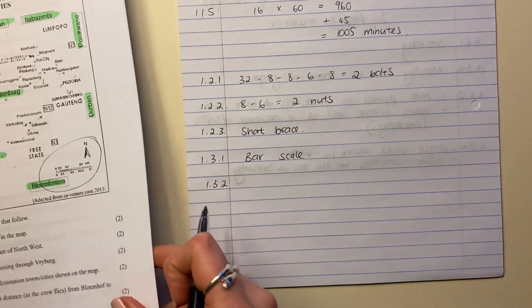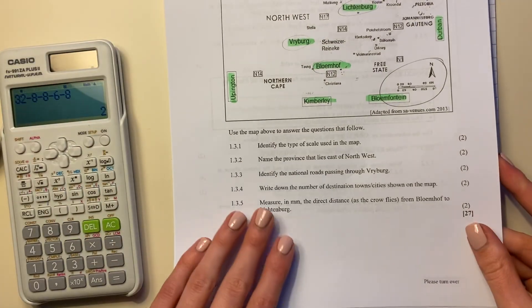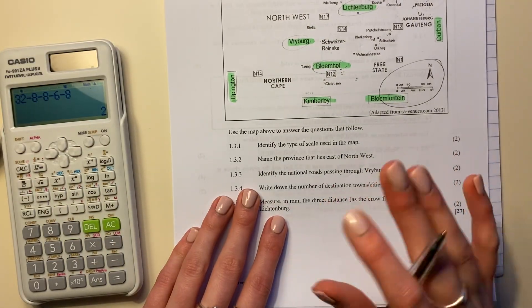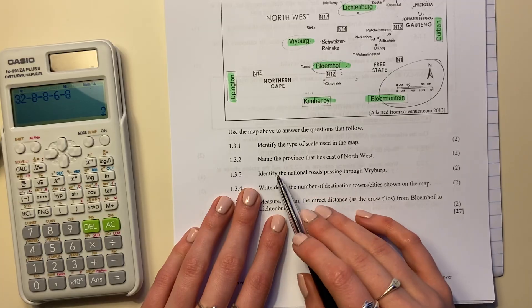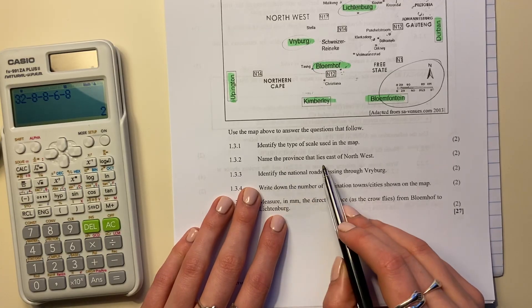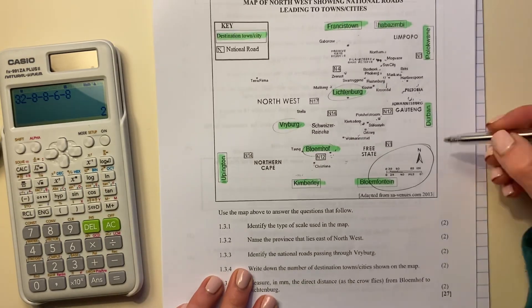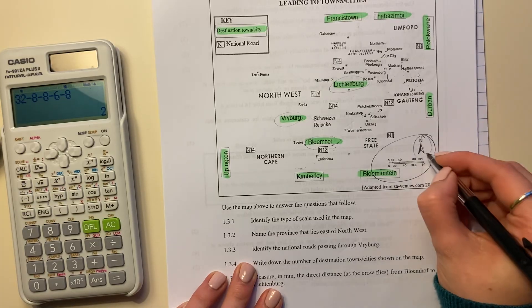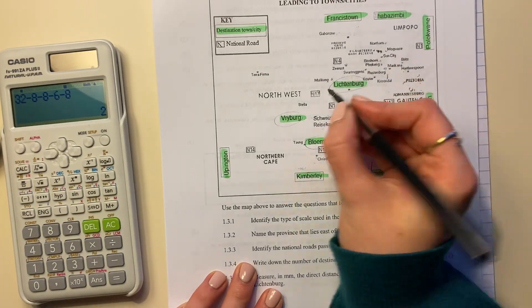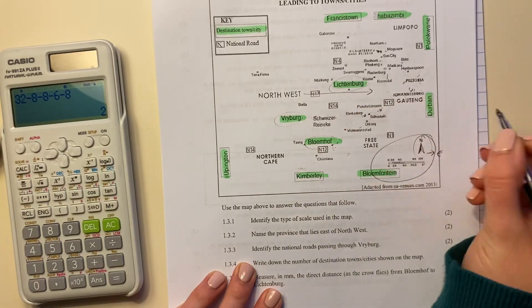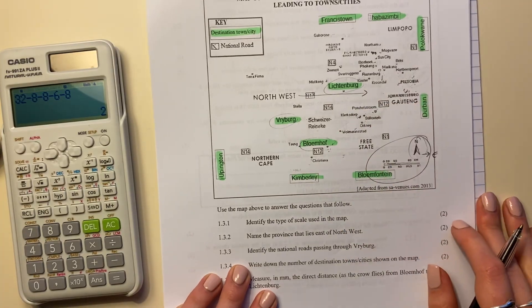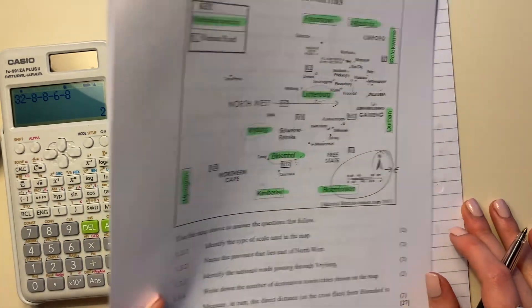You see these questions, question one of papers are not generally that difficult. So if you want to jump forward to the other videos for this paper, that's also fine. Name the province that lies east of northwest. Now there's north, so there would be east. If I'm standing at northwest and I look east, what am I looking at? I'm looking at Gauteng. So that's your answer. It is Gauteng.